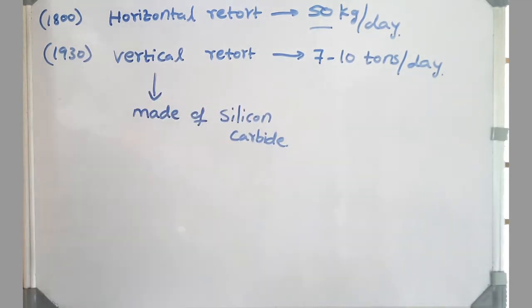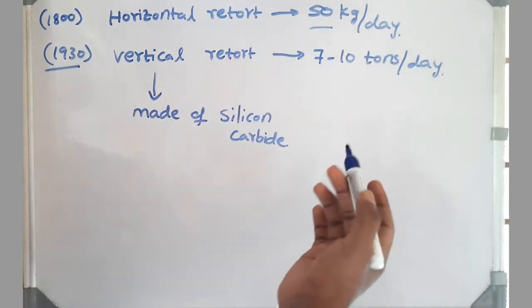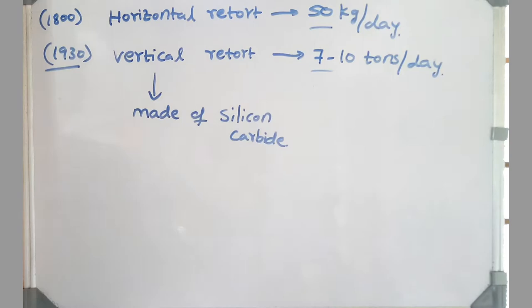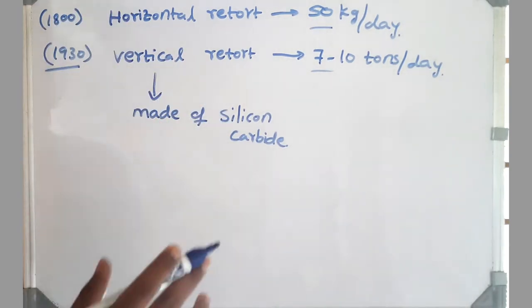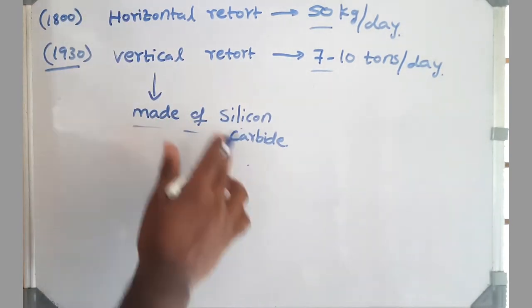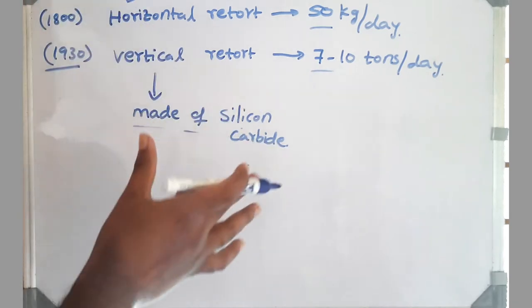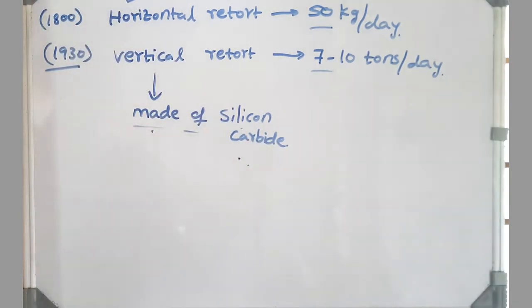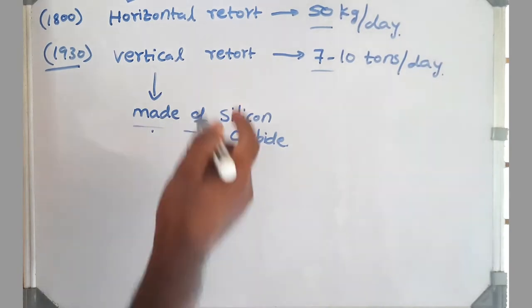But some improvements are made, and around 1930 the vertical retort process has been commercially adopted. This gives us much higher production of zinc: 7 to 10 tons per day. And the major modification is here - it is made up of silicon carbide. Horizontal retort is made up of clay, and here silicon carbide has high thermal conductivity, almost five times that of clay.